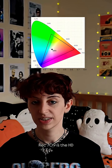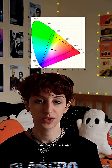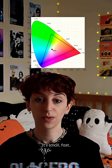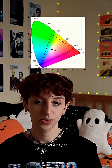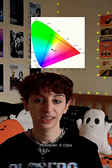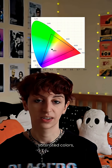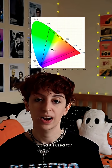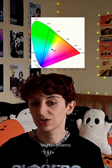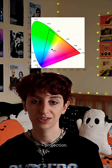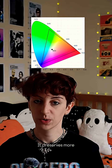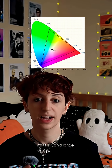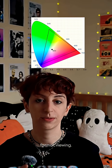Rec.709 is the HD standard, especially used for broadcast. It's small, fast, and easy to grade; however, it clips saturated colors, reds, and greens. DCI-P3 is wider and it's used for digital cinema projection. It preserves more color, especially for HDR and large format viewing.